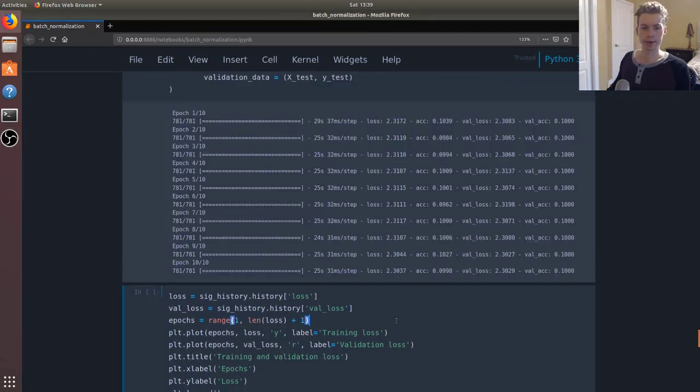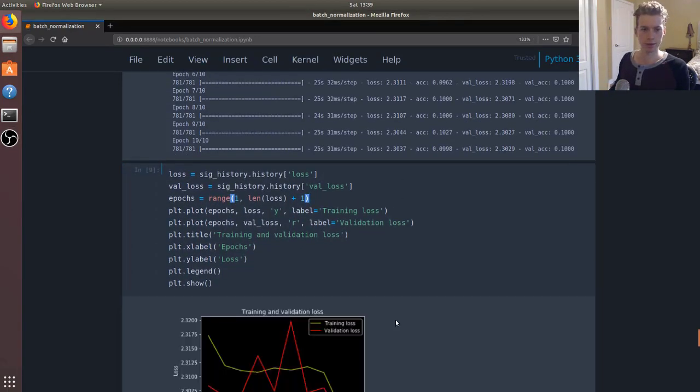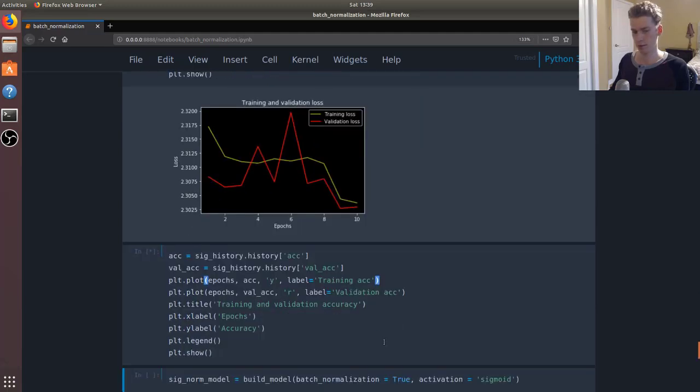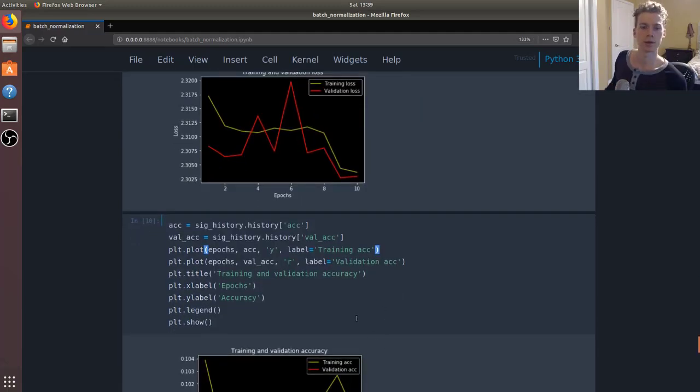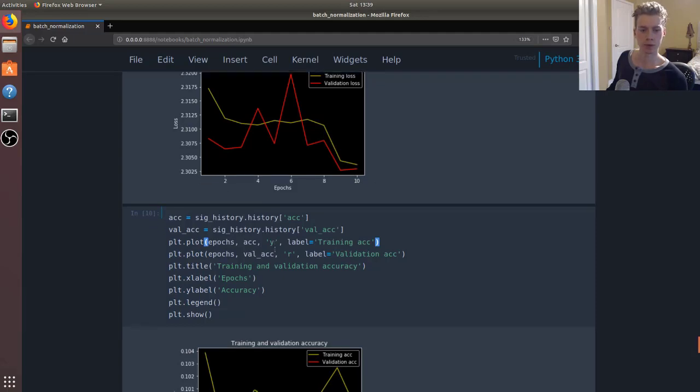We're back. Let's take a look at what it looks like. We can see here that our validation loss decreased as we trained the model, as well as our training loss.